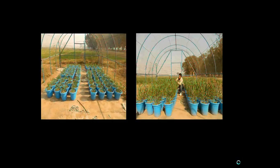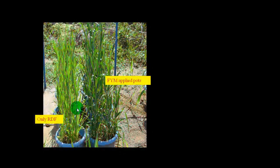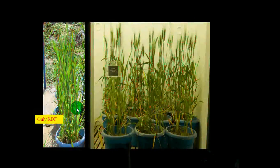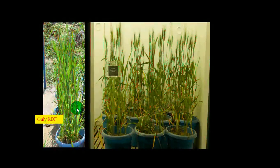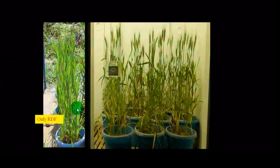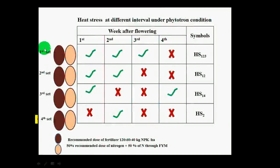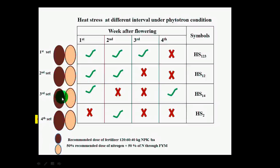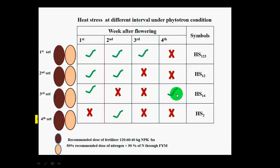The second experiment was conducted under net house and phytotron conditions. The first set used FIM hydropriming to prime the wheat seed, then the seedlings were transferred to the phytotron for heat exposure for three days at 3°C above ambient temperature. Heat stress was given at different timings: the first set at the first, second, and third week after flowering; the second set at first and second week; the third set at first and fourth week; and the fourth set only at the second week after flowering.